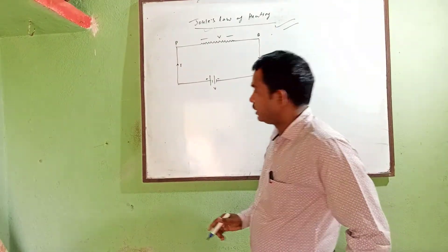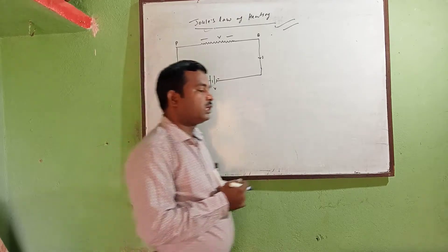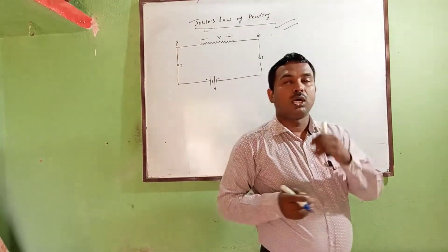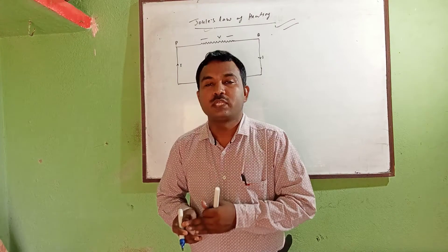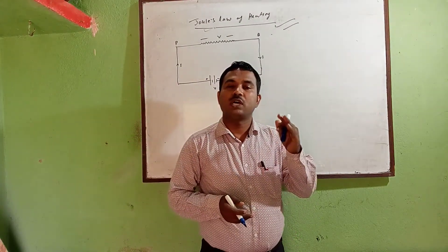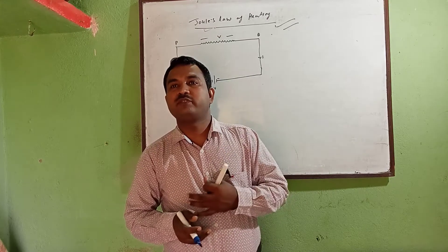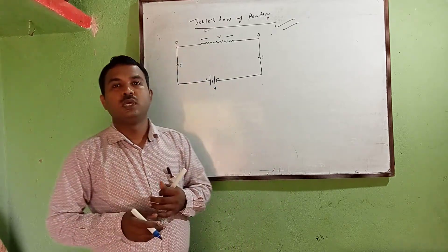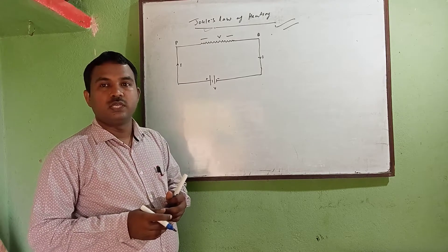According to Joule's Law, the heat generated depends on some factors. The first factor is the square of the current. The second is the resistance. And the third is the time for which current flows. These are the factors that we combine to find out the relation.